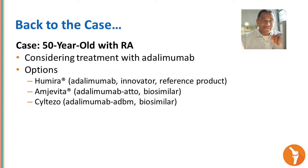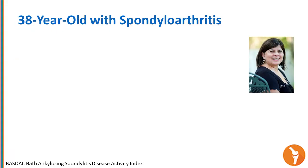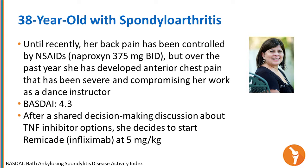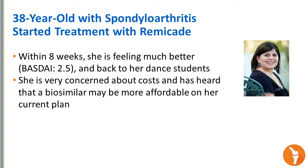Back to the case. Now we have a 38-year-old with spondyloarthritis who had inflammatory back pain, was on non-steroidals, then developed chest pain—common in SpA. She has an active BASDAI of 4.3, and after shared decision-making about a TNF inhibitor, she chooses infliximab branded Remicade. She starts the drug, and eight weeks later, her BASDAI is down to a low level and she's returned to activity. However, she's concerned about cost and has heard that a biosimilar may be more affordable on her current plan.